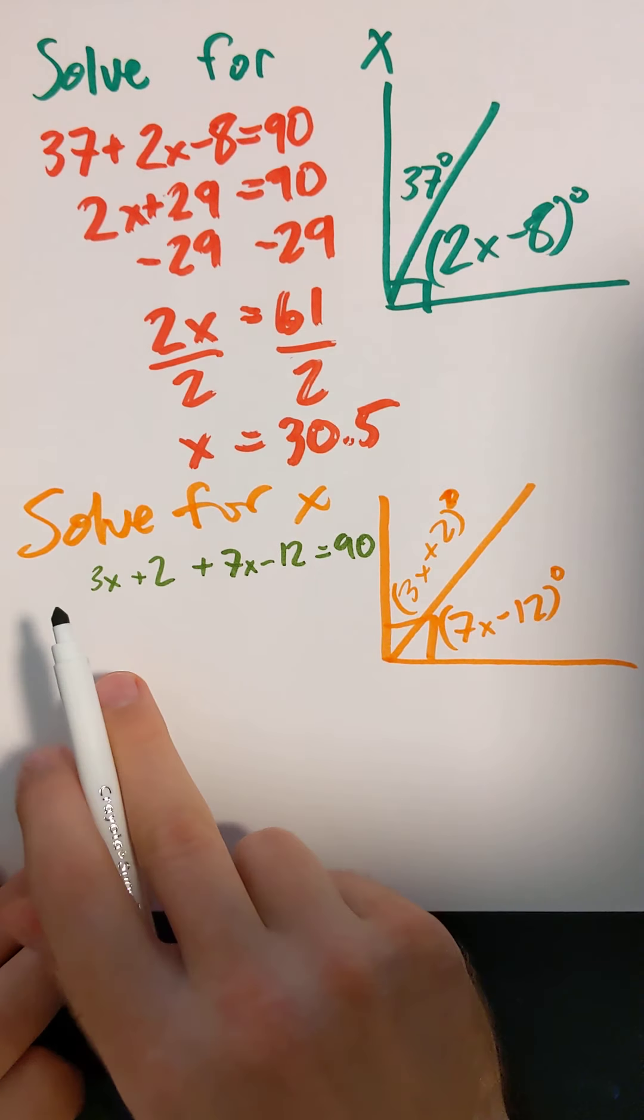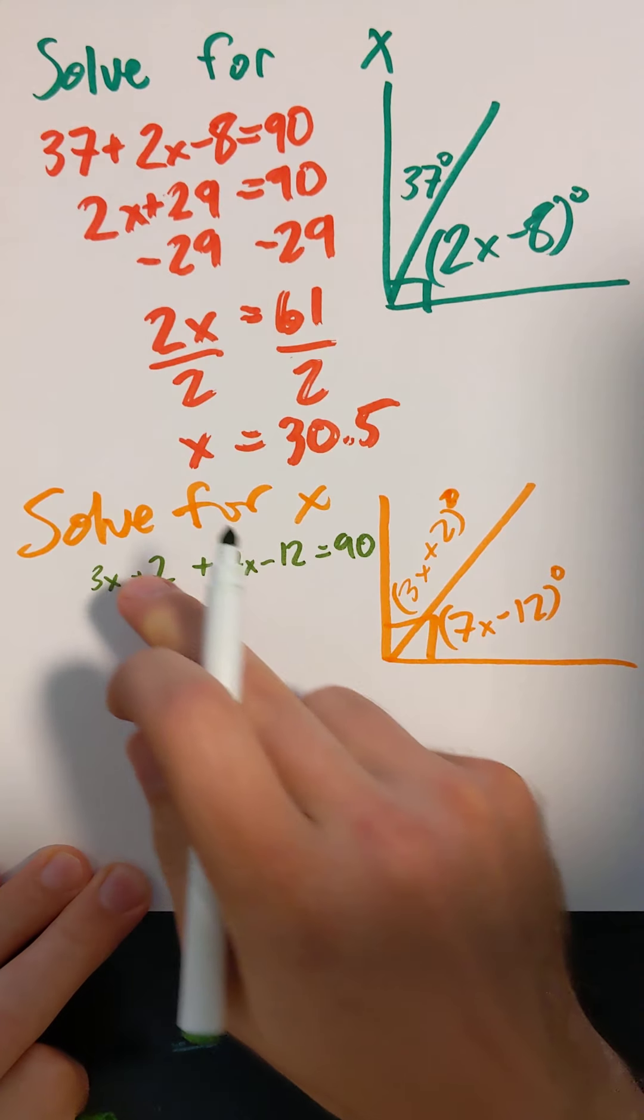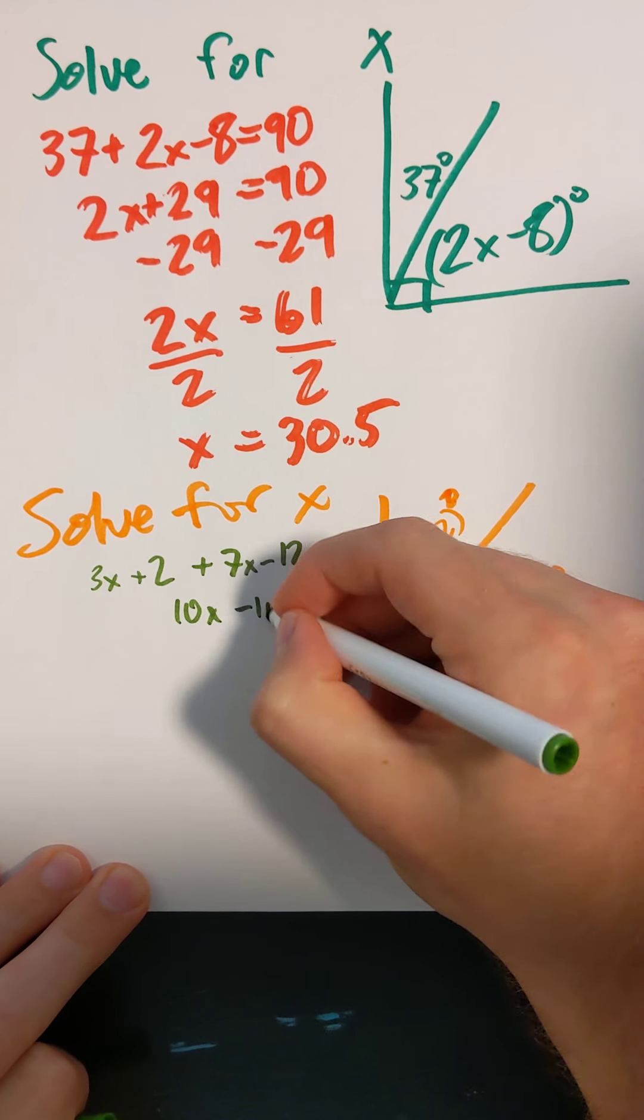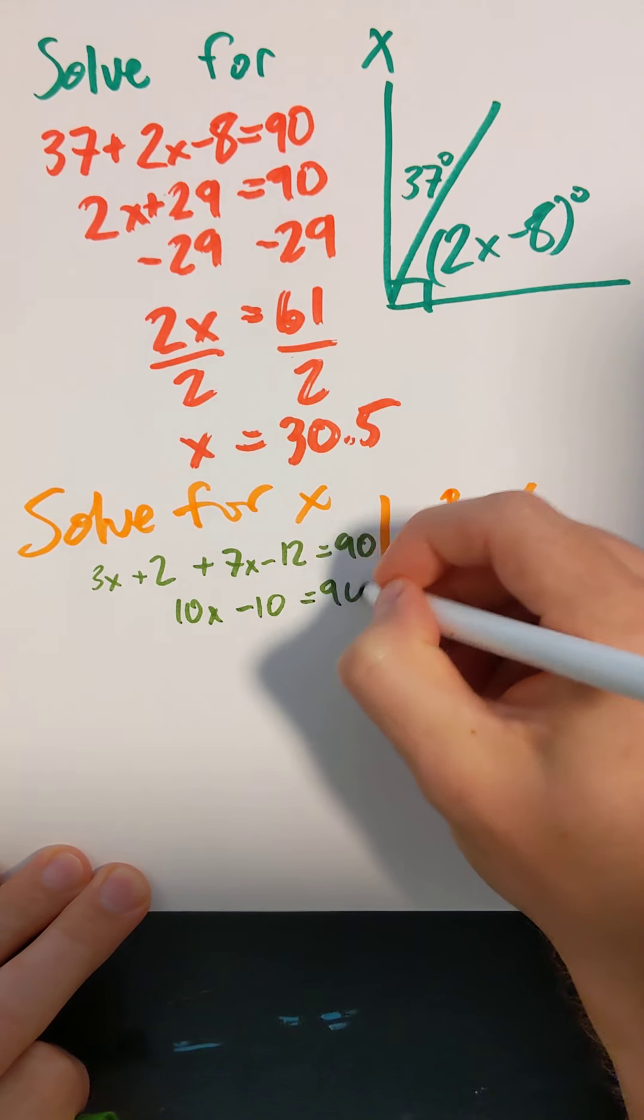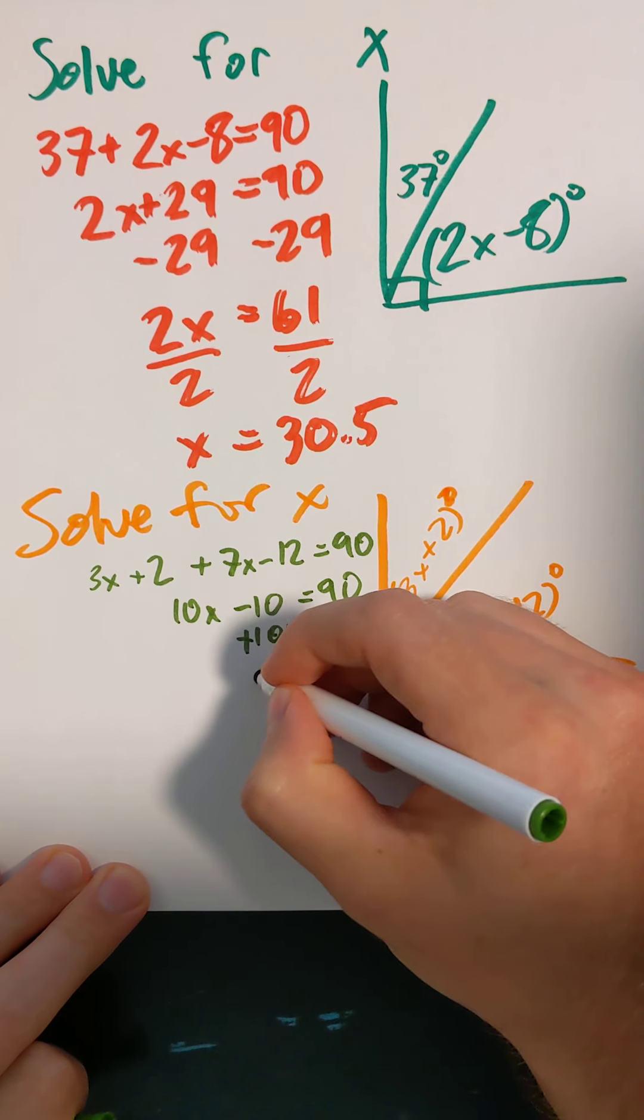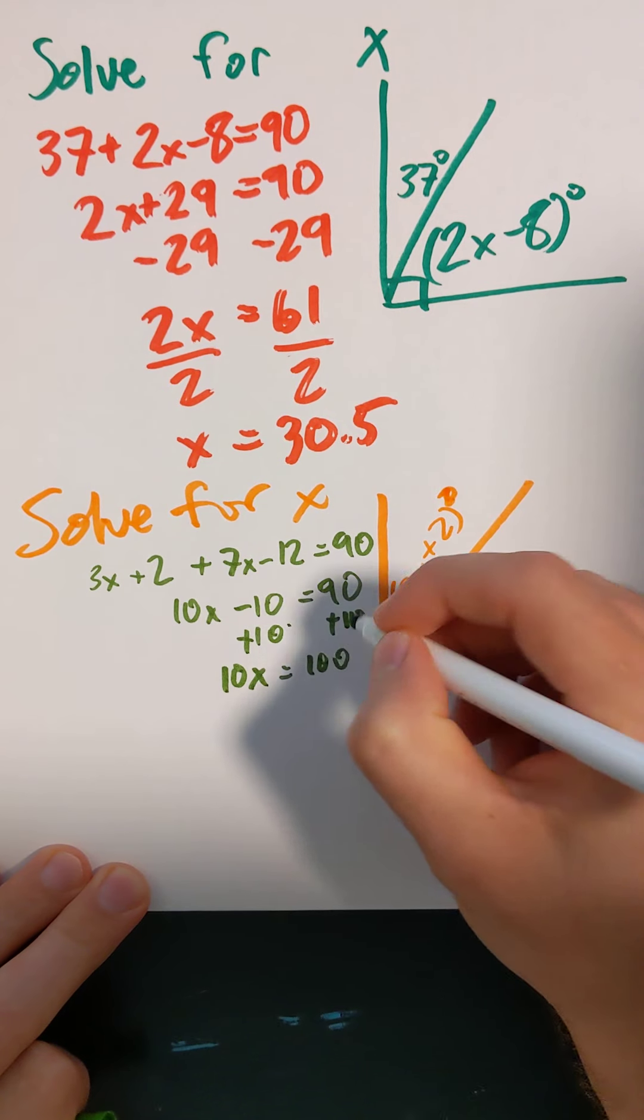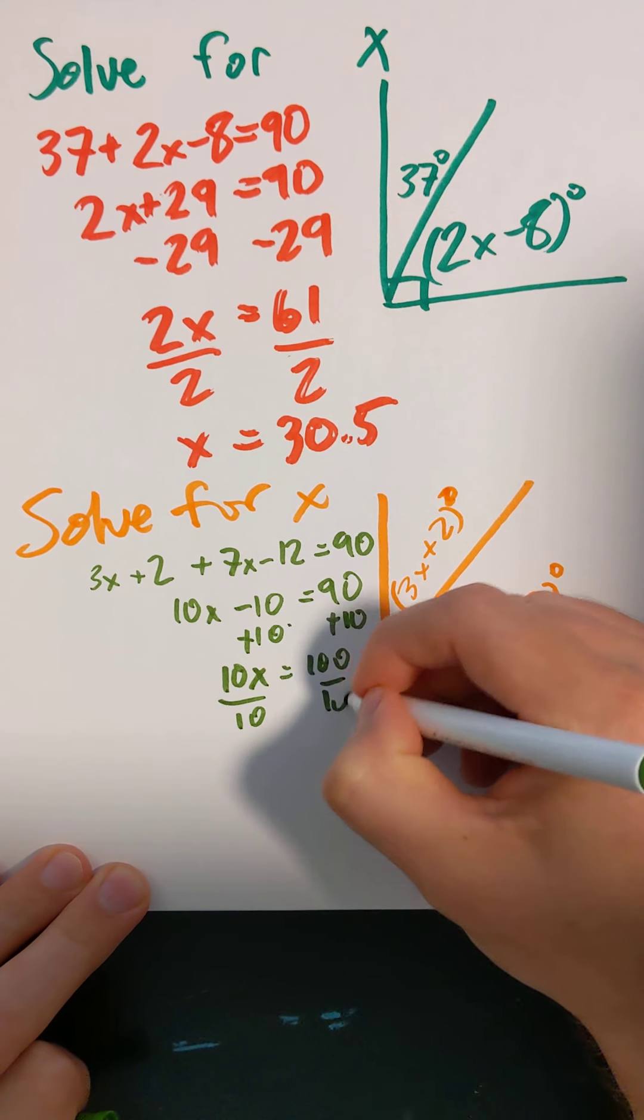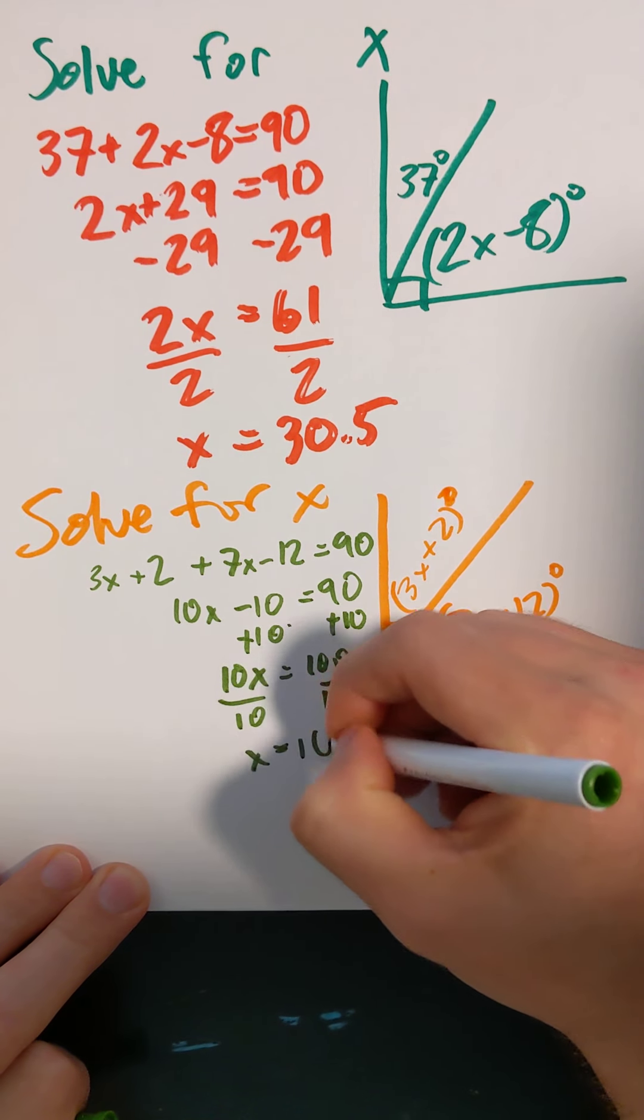Now I can combine like terms. 3X plus 7X is 10X. 2 minus 12 is negative 10, equals 90. We'll add 10 to each side, and 10X equals 100. Divide by 10, and X equals 10.